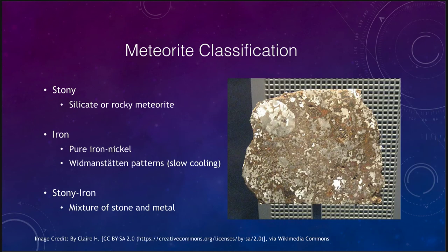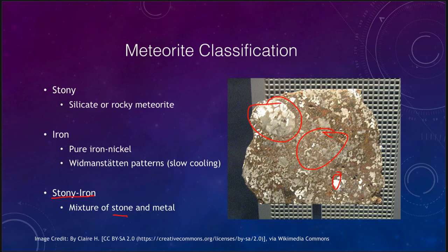The third type is stony-iron meteorites, which are a mixture of the two. You see stony material in some areas and metallic inclusions in others. These could have formed within a larger object that was in the process of differentiation — where things had been molten and material was in the process of separating. Around the border, material may not have finished separating before it was broken apart, resulting in metallic inclusions within the overall stony structure.